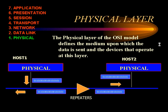The physical layer of the OSI model defines the medium upon which data is sent and the devices that operate at this layer. The primary device that operates at the physical layer is a repeater.